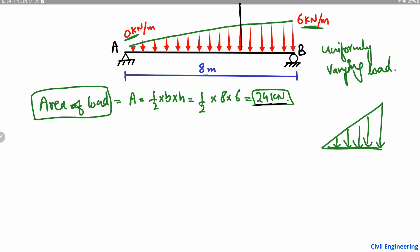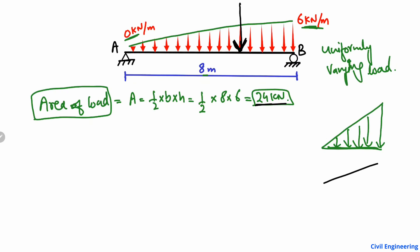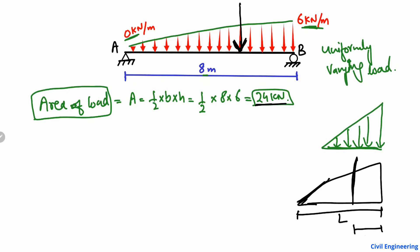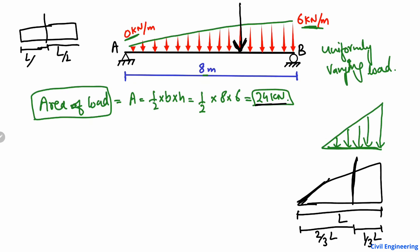In a triangle, the centroid is always located at one-third of L from the nearer end and two-thirds of L from the far end. In contrast, for a rectangle, the centroid is always at L/2 from each end. So in the case of a triangle, the centroid is always one-third from one end and two-thirds from the far end.